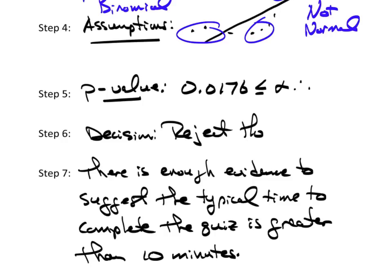Now, if the p-value were greater than 0.05, let's just pretend here for a moment. Let's just pretend the p-value was 0.062, which is greater than alpha. Then the decision would be to fail to reject. And then you simply say there is not enough evidence to suggest the typical time to complete the quiz is greater than 10 minutes. That's the only difference.